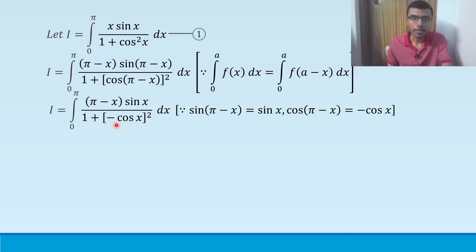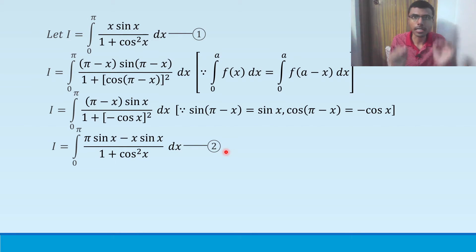This minus cos x whole square is going to be nothing but minus whole square is positive. So this will be nothing but cos square x only. And multiply, expand this bracket. Pi sin x minus x sin x. This you mark it as equation 2.